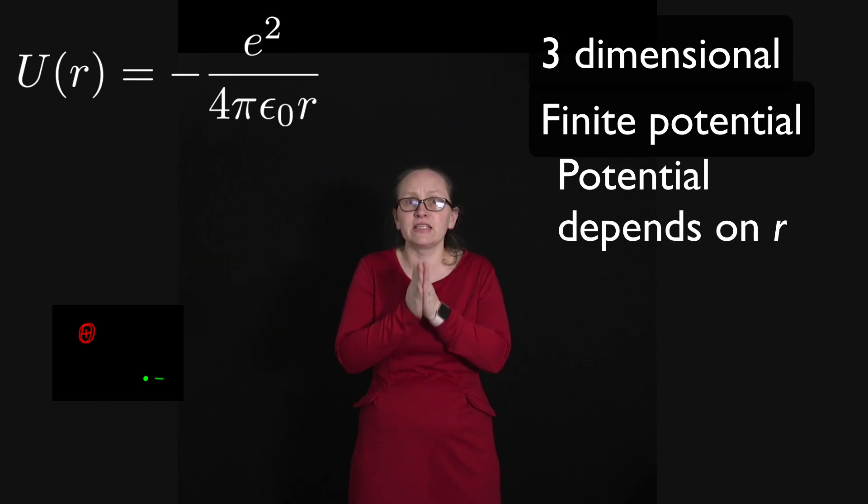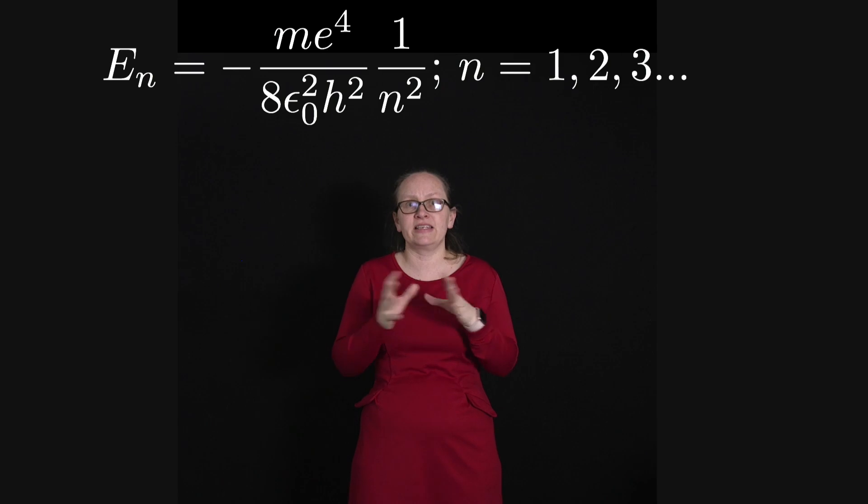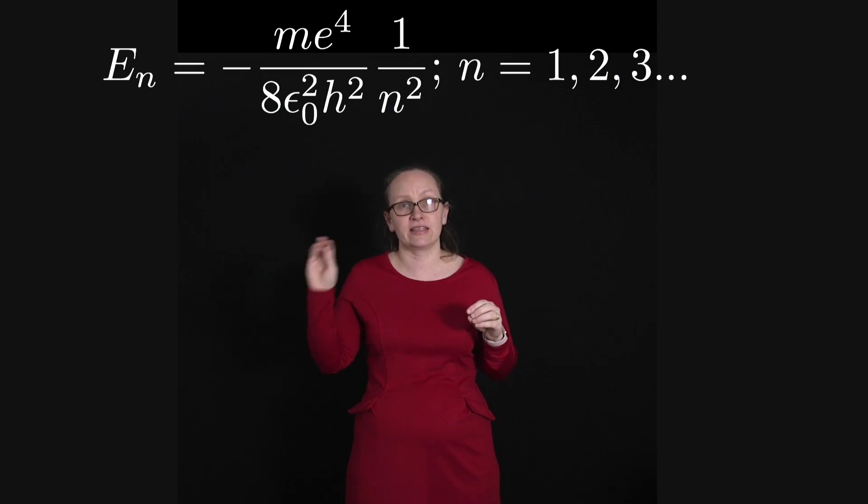However, it is possible to solve Schrödinger's equation for an atom, and if we do solve it what we find is that the energy of the states is given by the equation En equals minus Me to the 4 over 8 epsilon naught squared h squared times 1 over n squared, where n equals 1, 2, 3, etc.